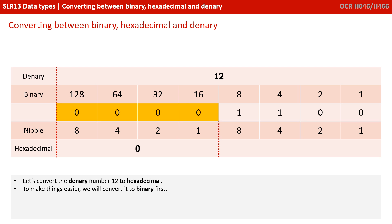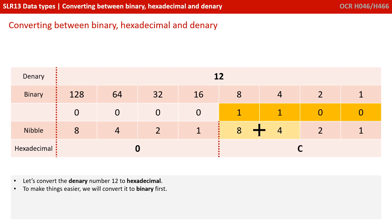Now to convert this number into hex, we group our binary into nibbles — that's groups of four. We have four zeros here; zero is obviously zero. We don't actually need this nibble, but we're showing it for completeness. In the next nibble, we have a 1 in the 8 column and a 1 in the 4 column: 8, 9, 10, 11, 12. Remember that 12 in hex is C. So the denary number 12 in hex is 0C, or more simply just C.